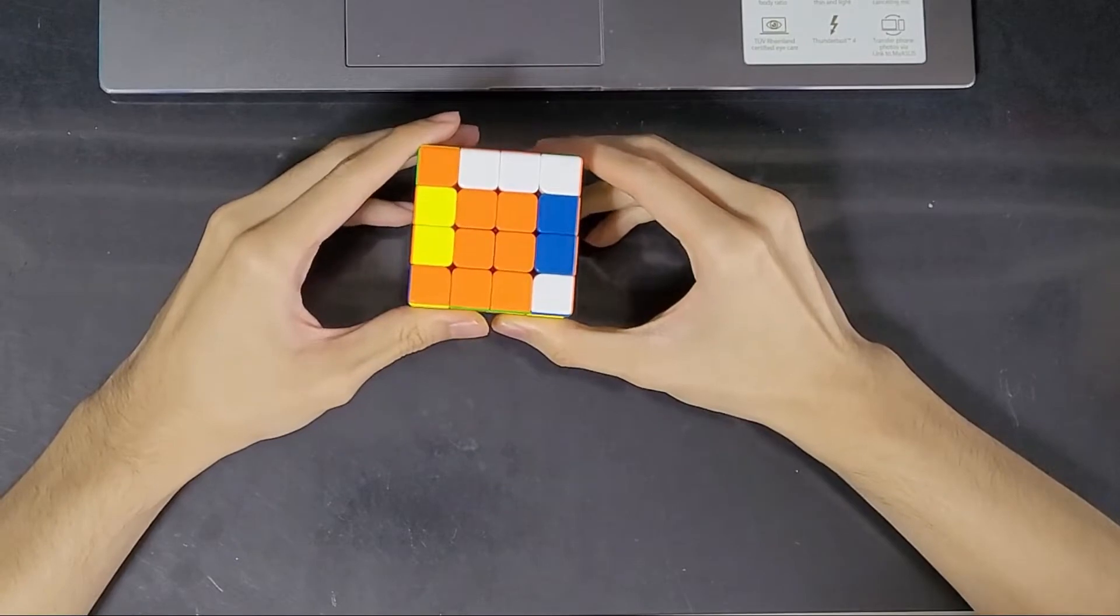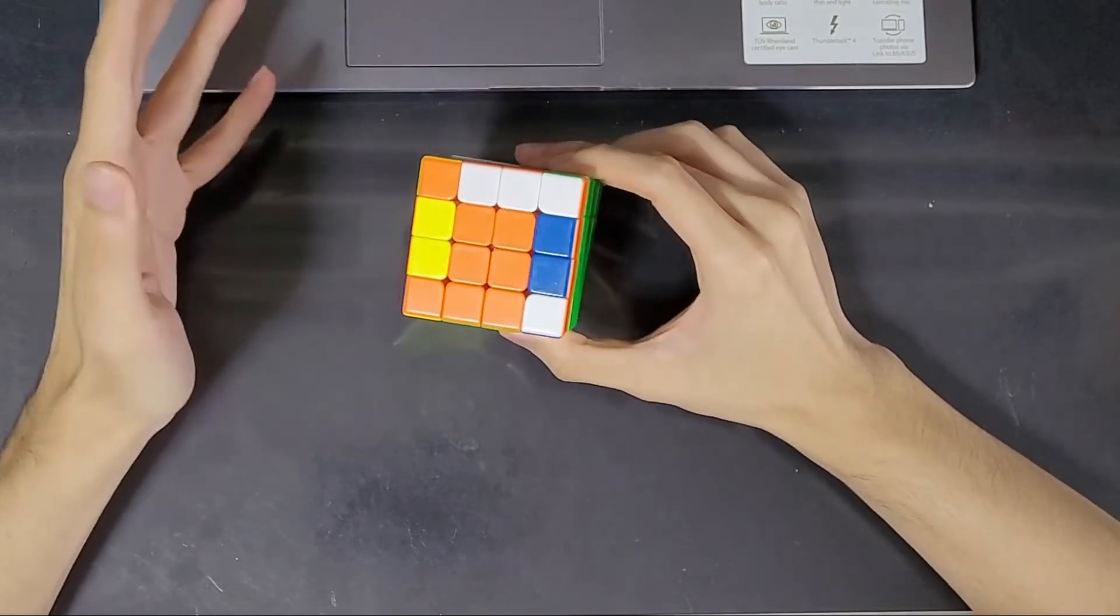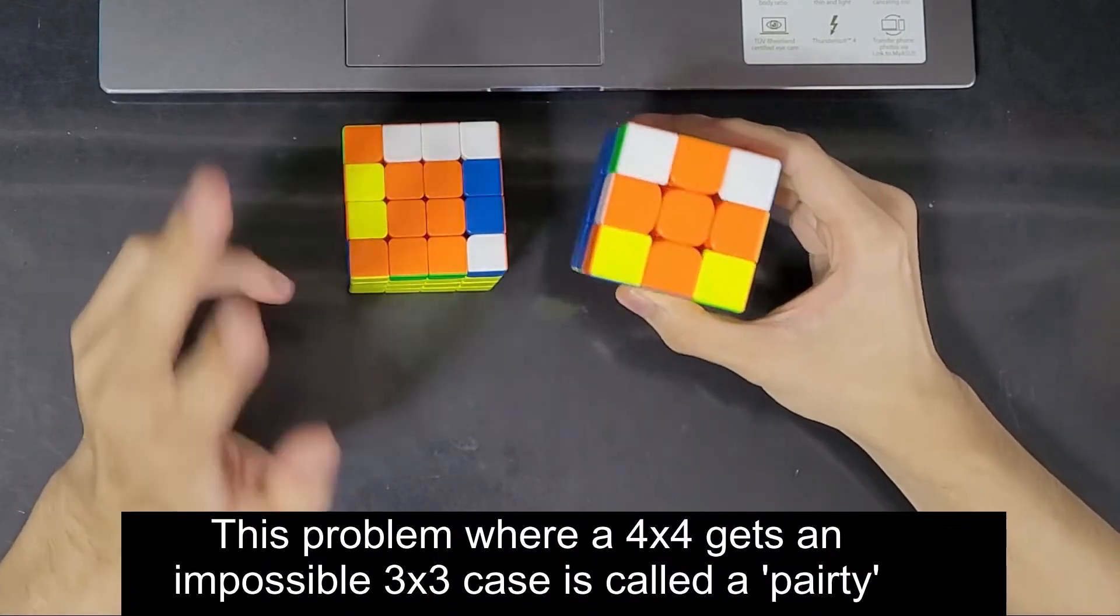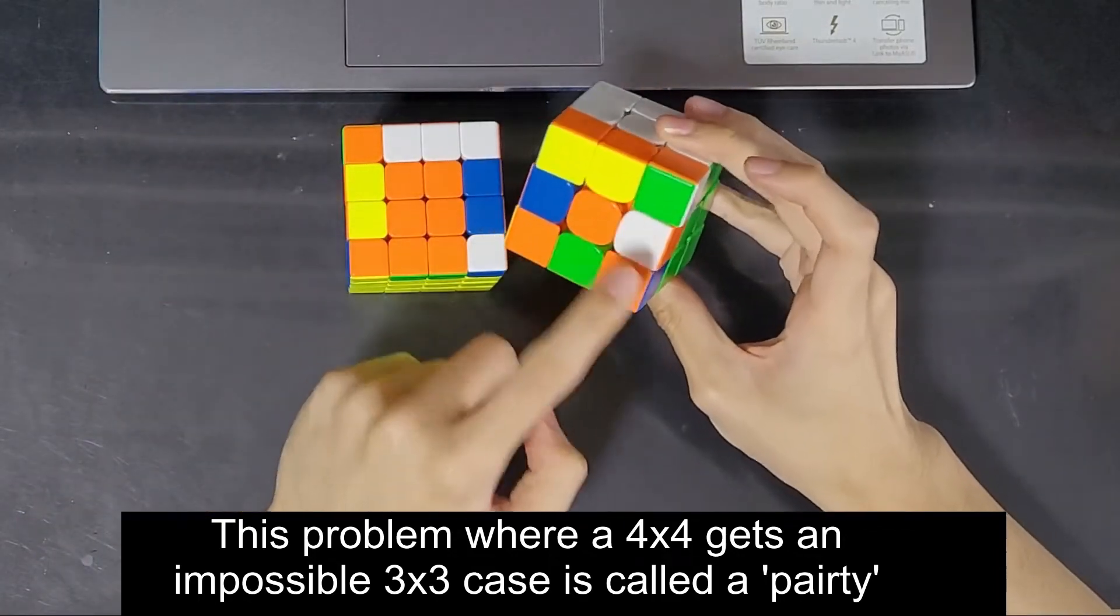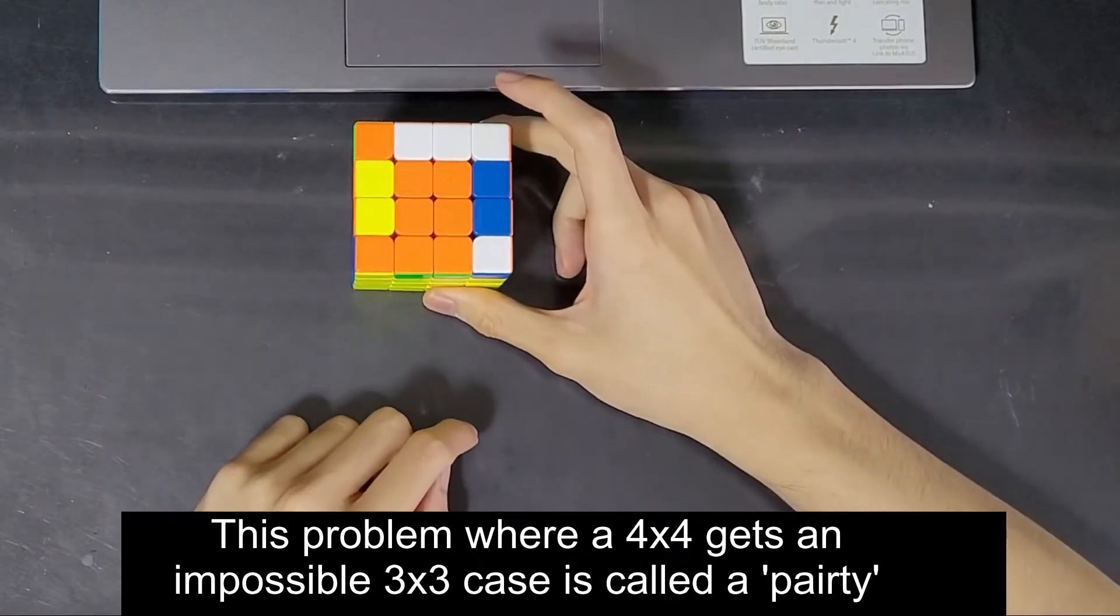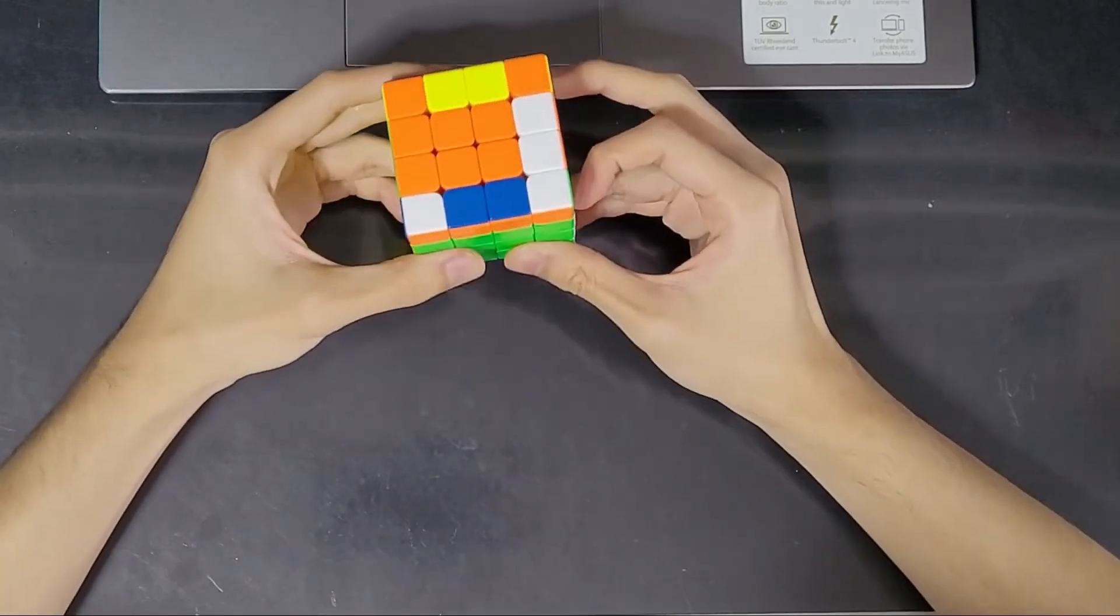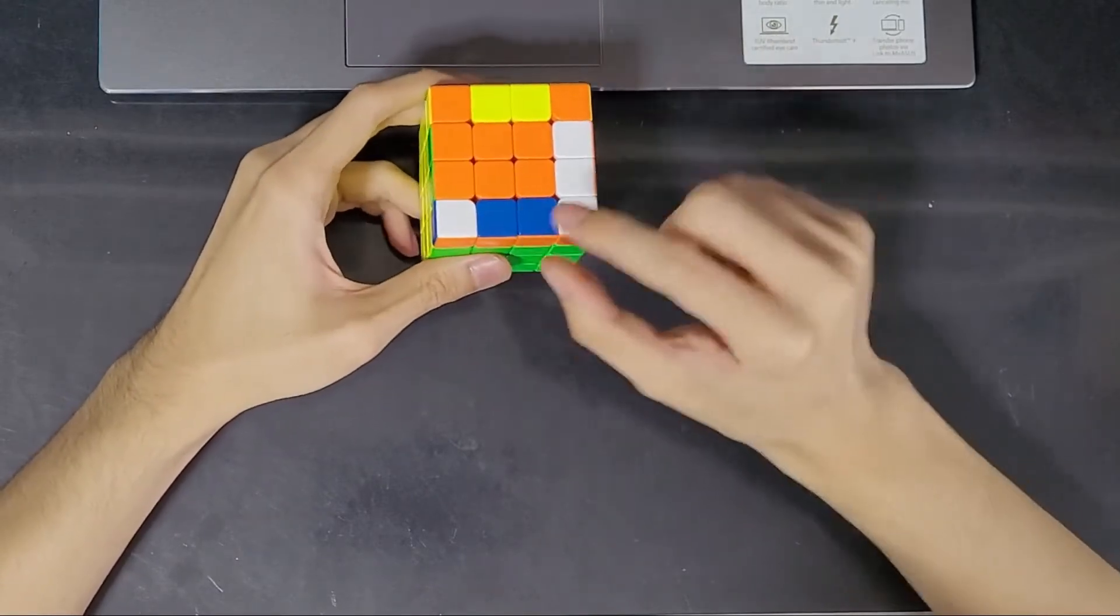At this stage most beginner methods will branch into two different general approaches. I'll be going through both in this video. But right here we have a problem. On the regular 3x3 there will always be an even number of edges wrongly flipped. It can be 0, it can be 2, or it can be 4. You will never have an odd number unless somebody plucked a piece out of your cube and put it in wrongly. But on the 4x4 it's possible to get this under natural circumstances. And we will need a special algorithm to flip one single edge.